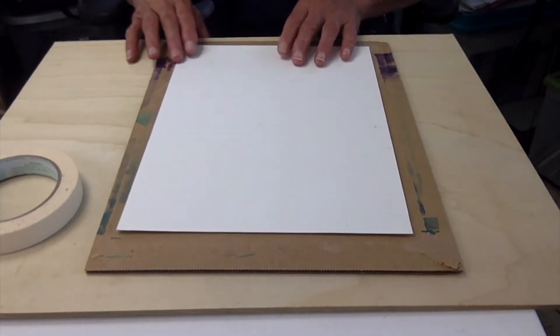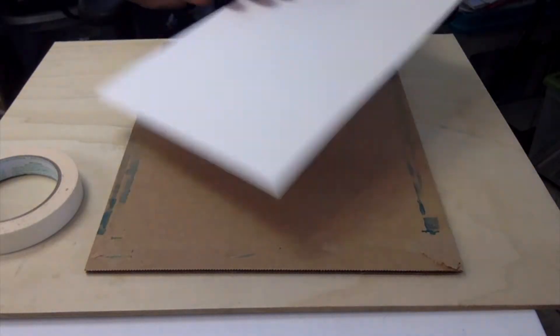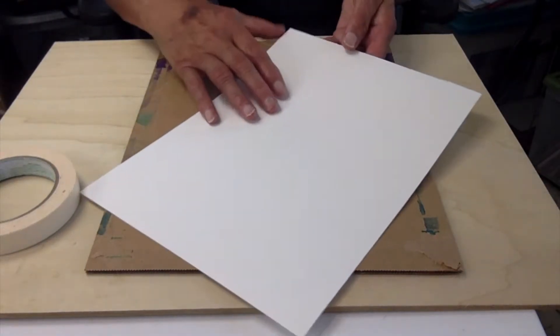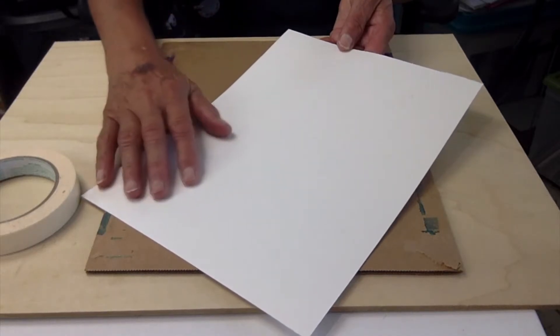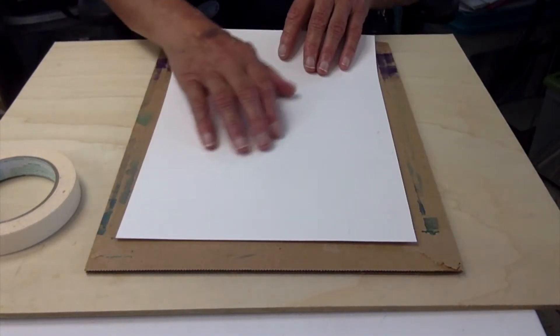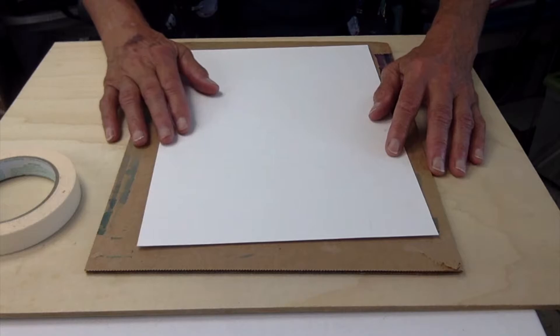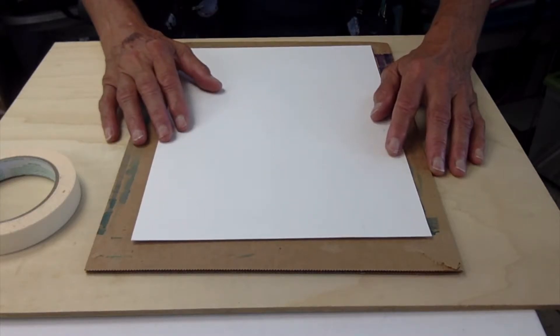Now I'm using the Canson XL paper and you'll see there's two surfaces. One surface is a little smoother and the other side is a little bumpier, and I want to go ahead and use the bumpier side to paint on.